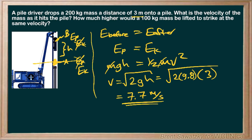In other words, it's a large mass, a small amount of drop - it's not even going to get anywhere close to a terminal velocity, so that's a pretty accurate estimate. Now we're asked for a second part of this question: how much higher would a hundred kilogram mass be lifted in order to strike at the same velocity?